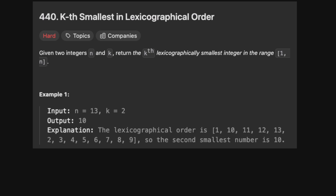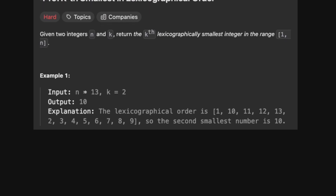Given two integers n and k, return the kth lexicographically smallest integer in the range from 1 to n. We're given an example of n equals 13 and k equals 2. So the numbers between 1 and 13 are 1, 2, 3, and so on up to 13.